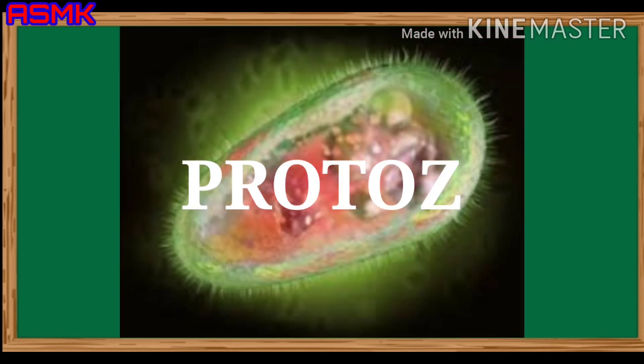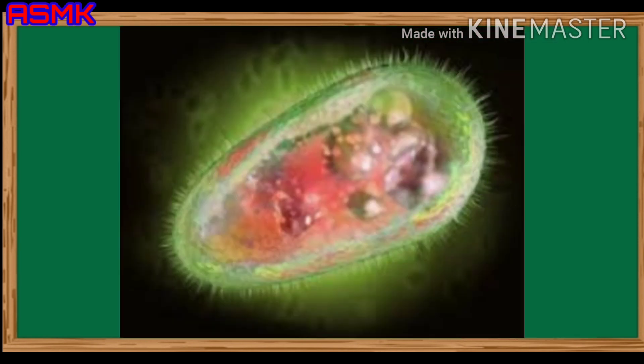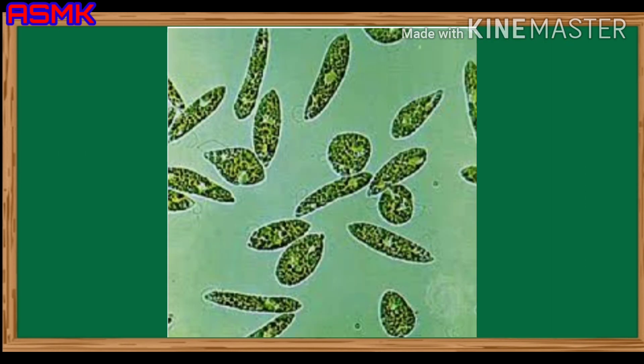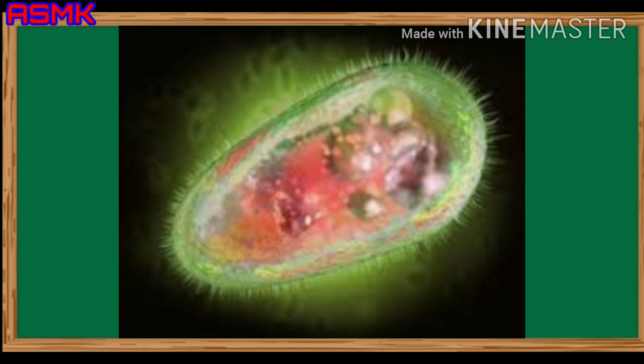Protozoa. They are a group of animal-like unicellular organisms. Amoeba, paramecium, and euglena are examples of protozoa.